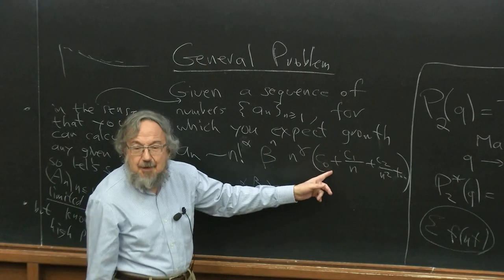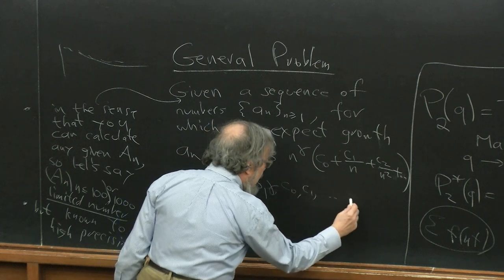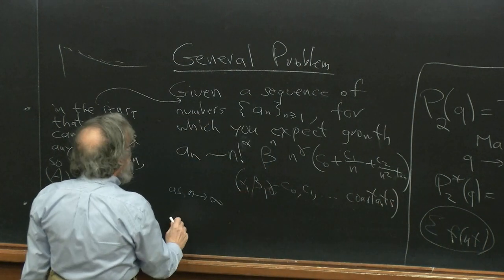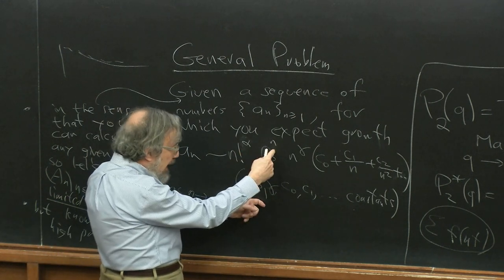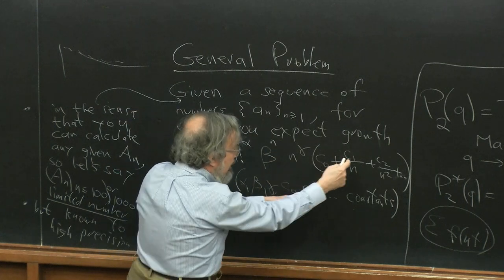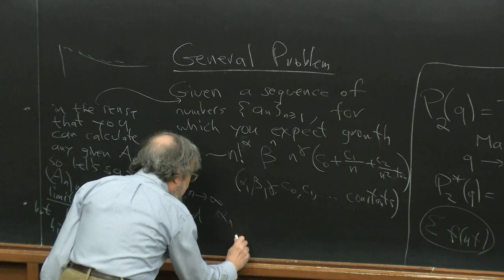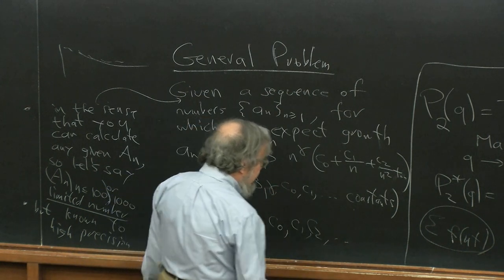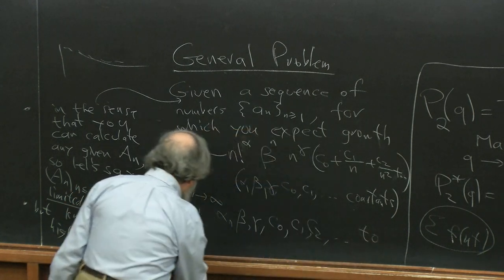You can also just start with a_n having a limit and want to find the limit, which is the special case. So here C_0, C_1, etc. are constants. These are in order of importance: alpha is dominant, after alpha beta is next, after beta gamma, after gamma C_0, then C_1, and so on. You have an infinite sequence of numbers, and the question is: find first alpha, then beta, then gamma, then C_0, then C_1 — say the first 10 or sometimes the first 50 — to high precision, and find them quickly.